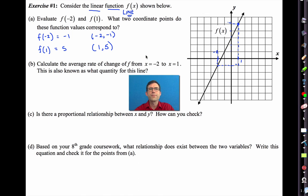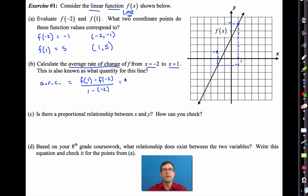Now, letter B asks us to calculate the average rate of change of f from x equals negative two to x equals one. Remember the average rate of change, I'm going to abbreviate as a.r.c. That's going to be change in y value, f of one minus f of negative two, divided by the change in the x values, one minus negative two. Literally change in y divided by change in x.